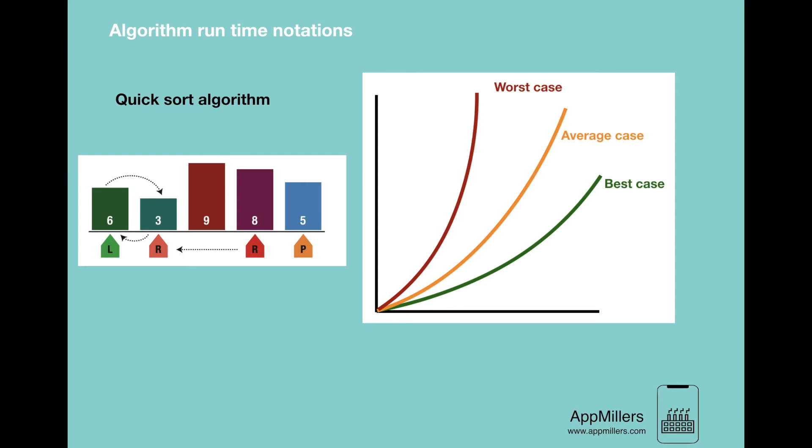In the best scenario, all elements are equal and the pass over through the list happens once. So in this case, time complexity will be O(n) because we are passing through all elements only once. If we have n elements in the list, our time complexity will be O(n).